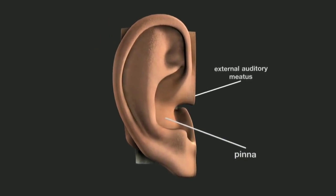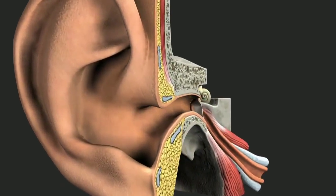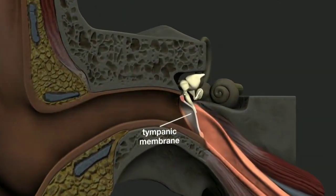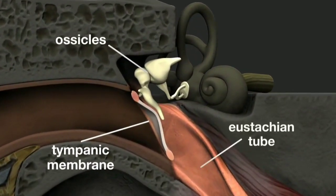The middle ear is an air-filled cavity located in the temporal area of the skull. It consists of the eardrum, the tympanic membrane, the ossicles, and the eustachian tube.